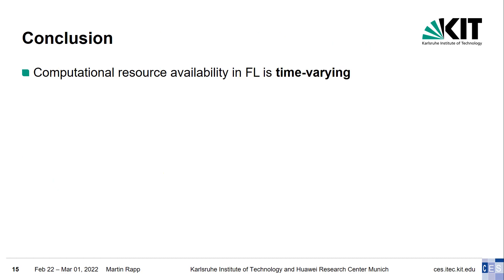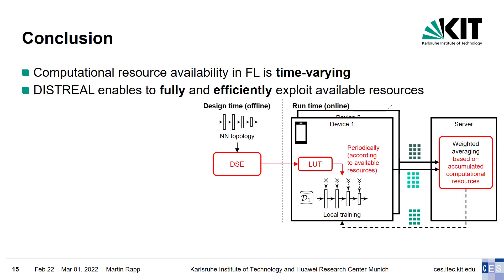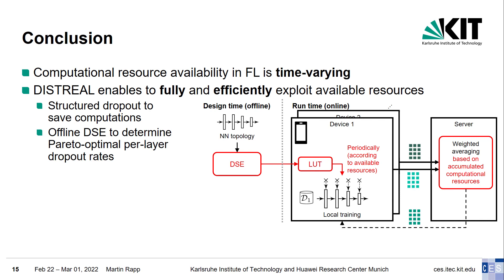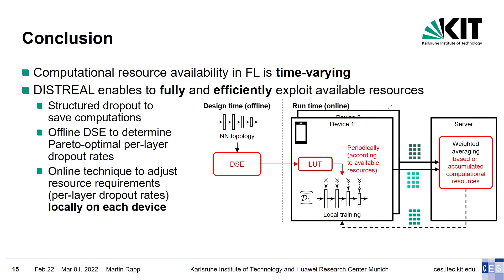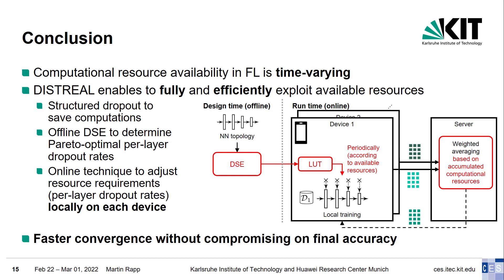In conclusion, we introduced the problem of time-varying computational resource availability, which has been neglected so far despite its growing importance, especially with the current trend towards learning on deep edge devices. We presented our solution DISTRIEL, which enables fully and efficiently exploiting the available resources using structured dropout to dynamically reduce computations. We showed that per-layer dropout rates are Pareto-optimal and required for efficient training, determined via an automated design space exploration based on an evolutionary algorithm. At runtime, each device adjusts dropout rates locally without server assistance to react to resource availability changes. Our evaluation showed that DISTRIEL achieves much faster convergence than the state-of-the-art, especially with fast-changing resources, without compromising on final accuracy.